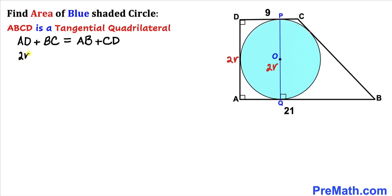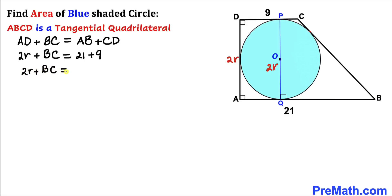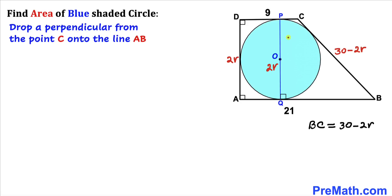Now let's fill in the blanks using the Pitot theorem. Replacing AD with 2r: 2r + BC = AB + CD = 21 + 9 = 30. Combining like terms, BC = 30 − 2r. So side length BC turns out to be 30 − 2r.